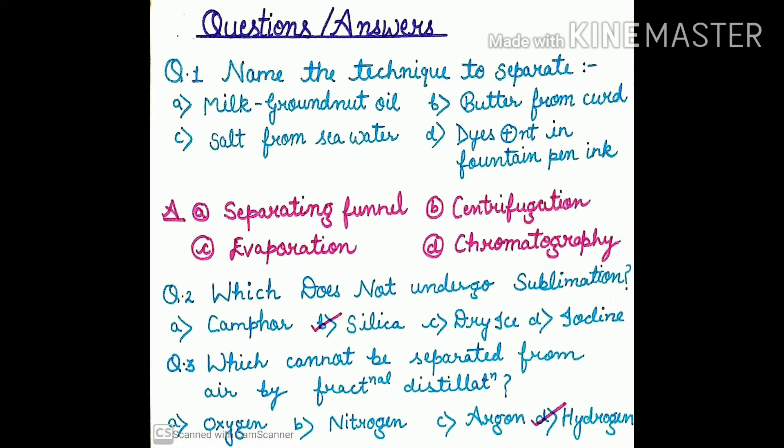Next question: which substance does not undergo sublimation? The options are camphor, silica, dry ice, and iodine. Sublimation is simply a process by which a solid is directly converted into gas, even without changing into liquid.